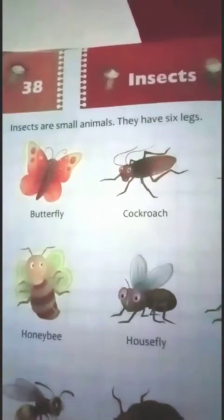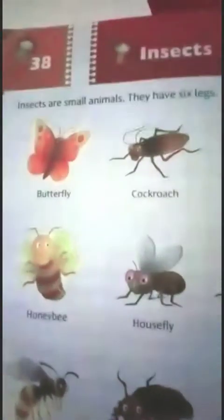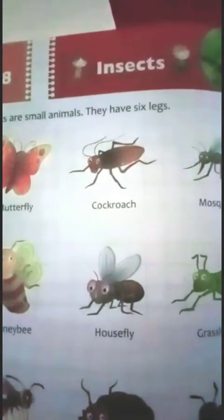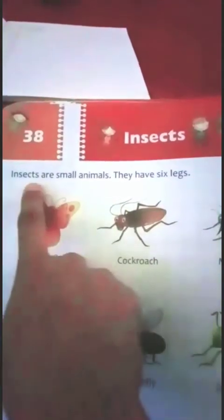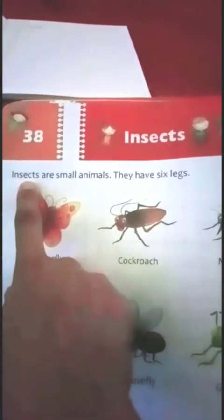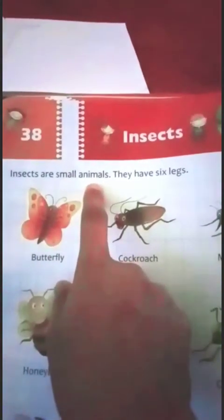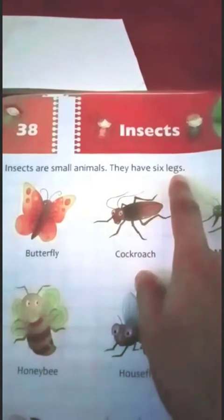Now take out your page number 60, chapter 38, insects. Today we are going to learn the chapter of insects. Now, two little things which we will learn. First: insects are small animals and they have six legs. How many legs do they have? They have six legs.